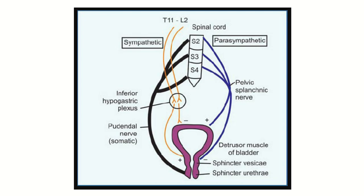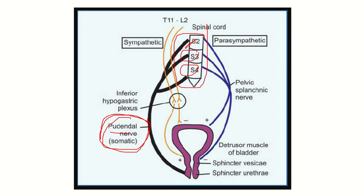In this picture we can also see the external urethral sphincter, and this external urethral sphincter is supplied by the pudendal nerve. The pudendal nerve supplies the external urethral sphincter during micturition, and it arises from sacral 2, sacral 3, and sacral 4.